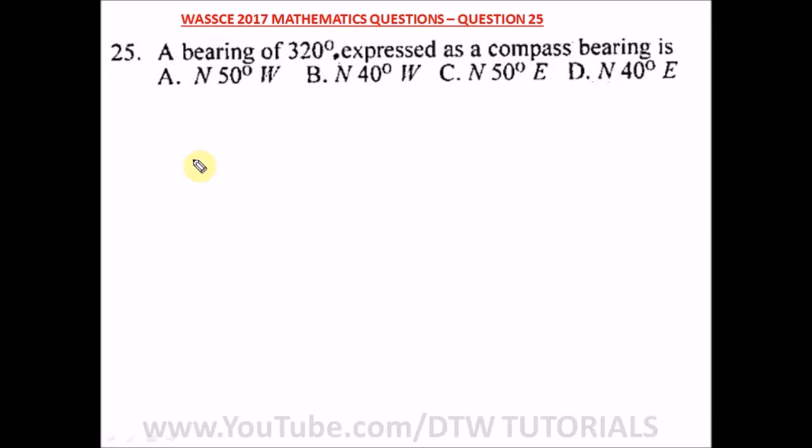Question 25 of WASSCE 2017 mathematics past question. It says a bearing of 320 degrees expressed as a compass bearing is... Remember bearing, you have North, East, South, and West.